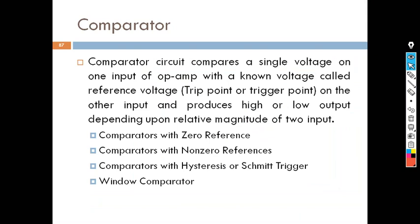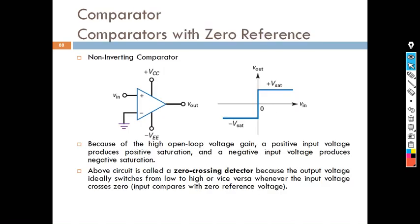Hello students. In the last session we discussed some applications of the operational amplifier such as the peak detector. In this session we will proceed and see the application of the operational amplifier as a comparator, which we will call a zero crossing detector or zero reference detector.